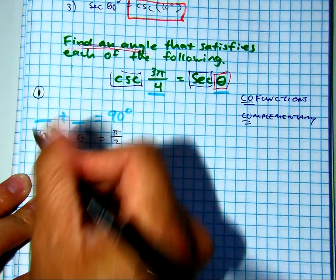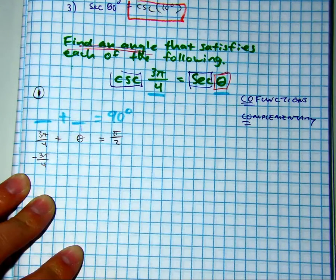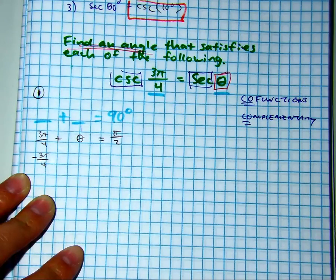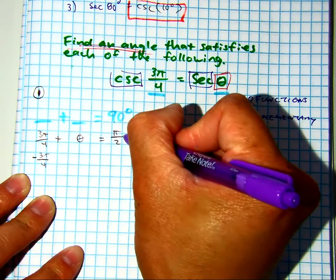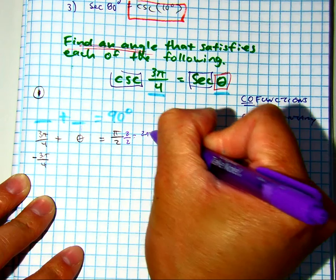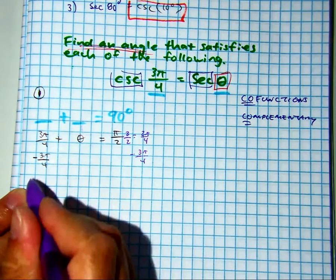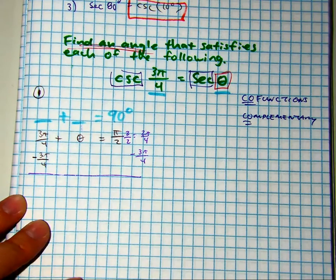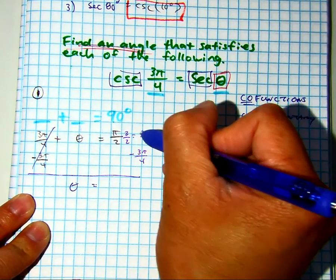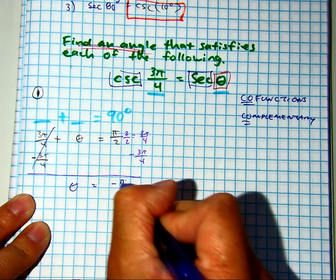If I subtract 3 pi over 4 on both sides, I'm going to have a denominator of 4, so I need to multiply this one by 2 over 2. That gives me 2 pi over 4. Subtracting 3 pi over 4, I get theta equals negative pi over 4 as my answer.